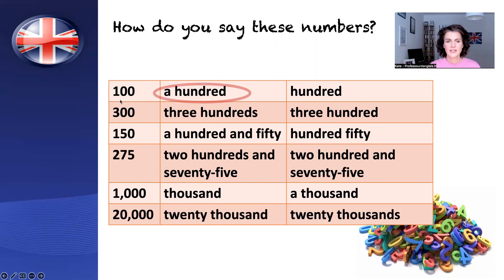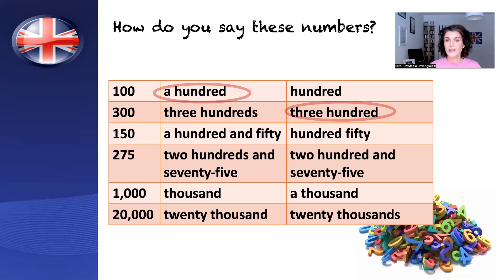Let's look at the next number. Do we say 'three hundreds' or 'three hundred'? We say 'three hundred'. We don't use plural rules with numbers.